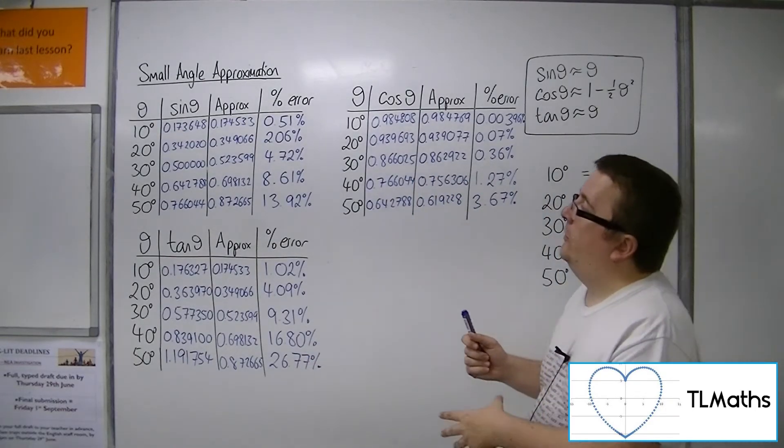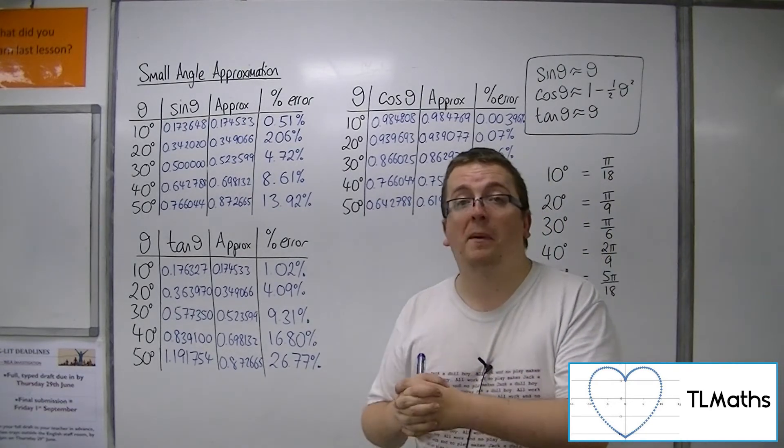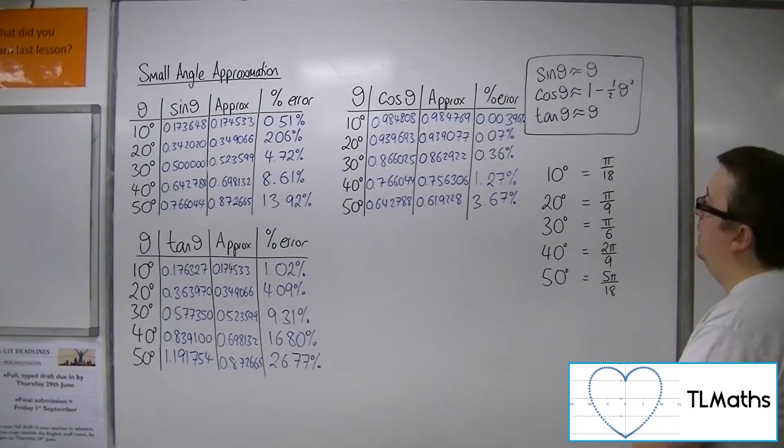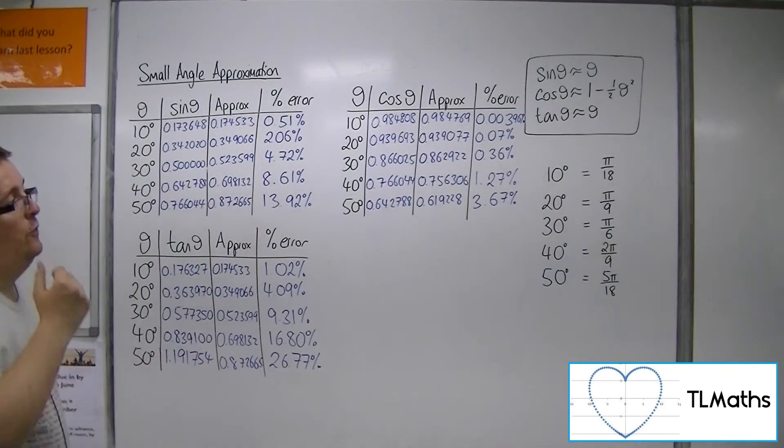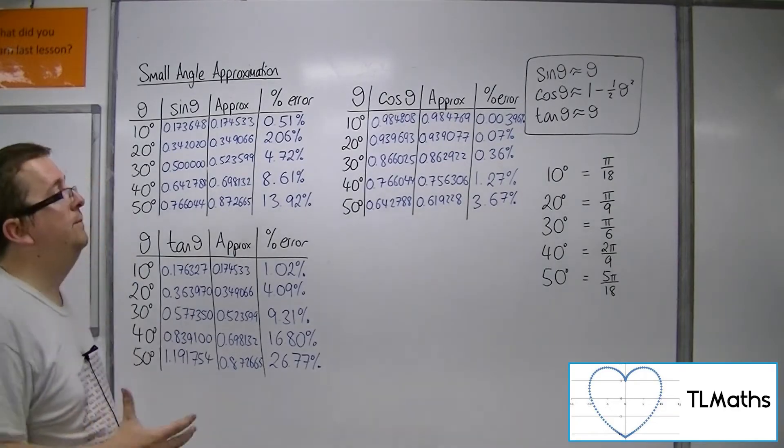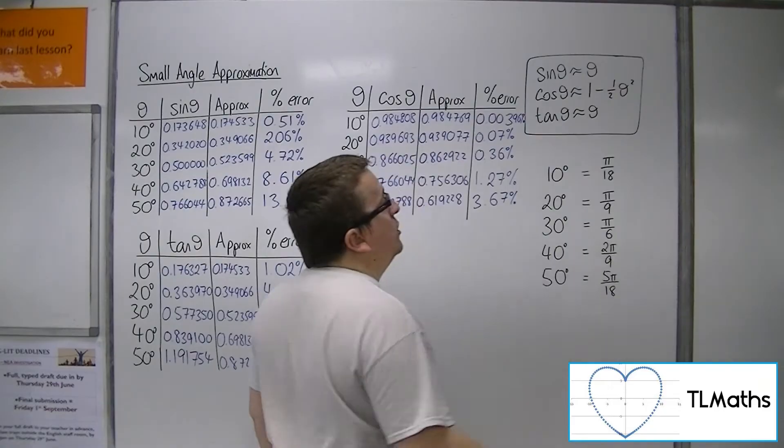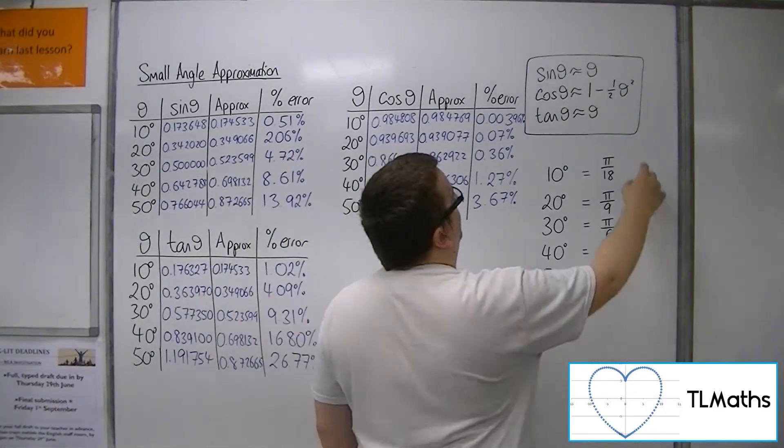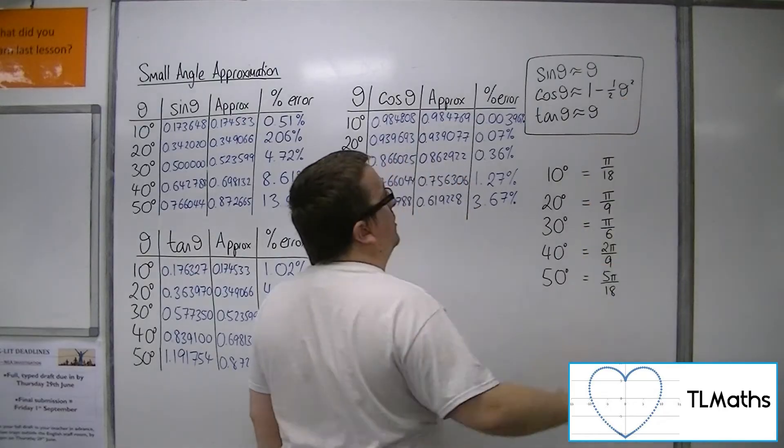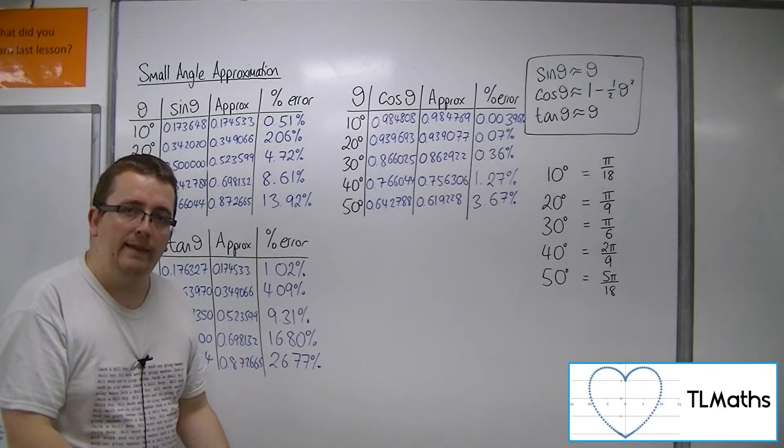So, why is this? What is causing these differences in the percentage error? Why are they behaving that way? Well, the cosine one, if we have a look at that first, the cosine one is being approximated by a quadratic. Because you've got that one step further with the approximation, because you've got that squared term being there.